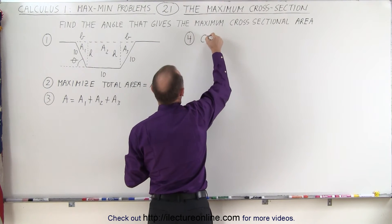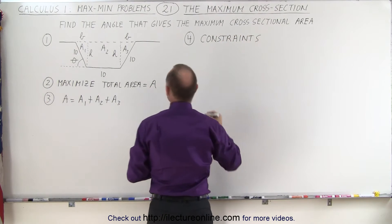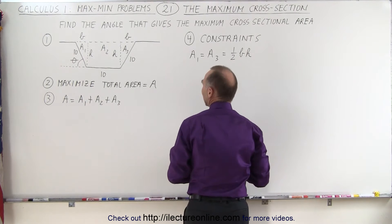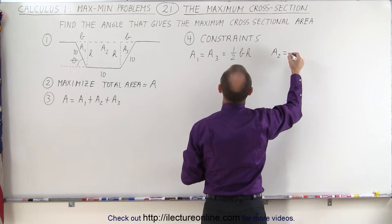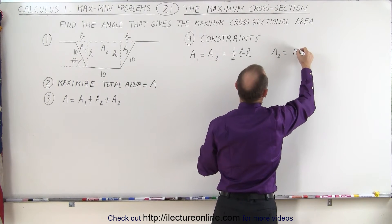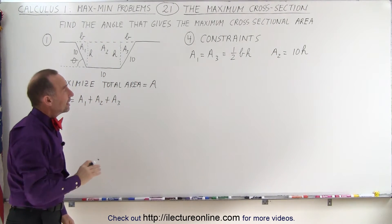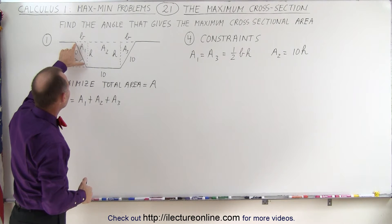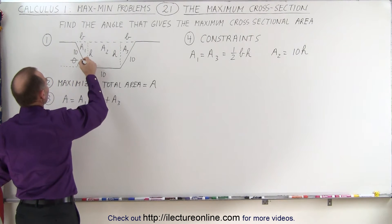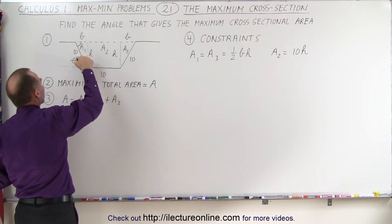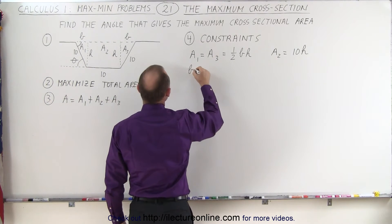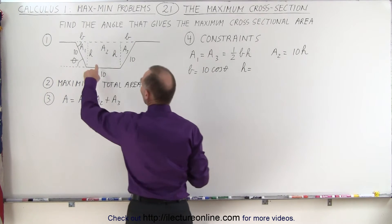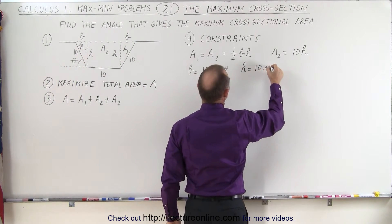We need constraints and relationships. A1 equals A3, each equal to one-half times base times height. A2 equals the width times the height, which is 10 times H. We also need to express B and H in terms of the angle. In the triangle, the hypotenuse is 10. B is the adjacent side to theta, so B equals 10 cosine theta. H is opposite to theta, so H equals 10 sine theta.